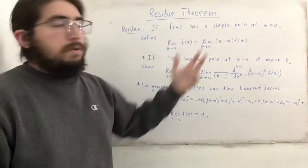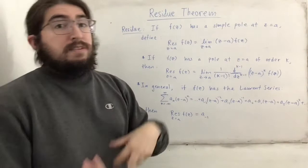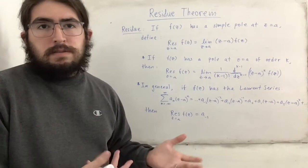The residue at z equals a of f of z is equal to the limit as z approaches a of z minus a times f of z. You can imagine that f of z has a denominator of the form z minus a, or has z minus a as a factor, which makes sense because when z equals a, you get a zero denominator. Multiplying by z minus a cancels that factor, so this limit will actually exist. That's why it's called a residue — it's what the denominator leaves behind when you ignore the factor making it zero.